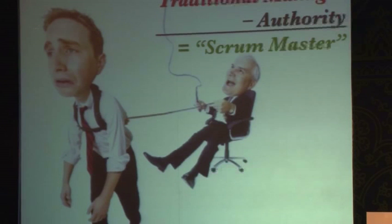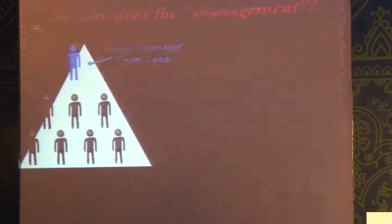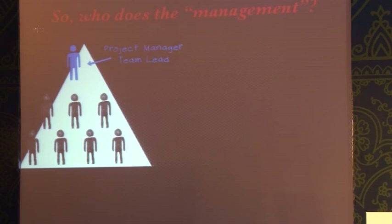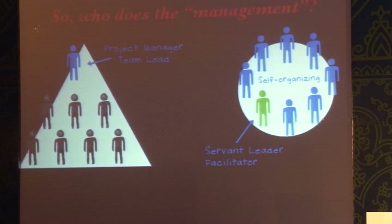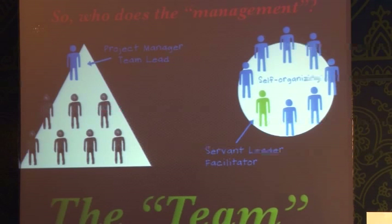If we took away the whole authority and the work is still supposed to get done — who does the management in the team? In a traditional project team we had the project manager and team lead taking care of that. In an agile team the expectation is a self-organizing team with a servant leader as facilitator, and management is done by the entire team. But has that really happened, or is it a promise that's been hyped and oversold?